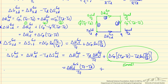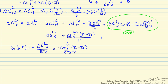So delta G of fusion of the solvent at temperature Td is related to delta H of fusion at the freezing point of the pure solvent, divided by that freezing point temperature Tf, multiplied by the temperature difference (Tf minus Td). Substituting this back into the earlier equation gives us a relation between delta G at Td, delta H, and the temperature difference.